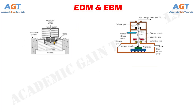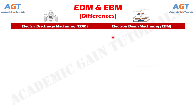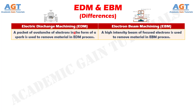Let's look into the basic differences between Electric Discharge Machining and Electron Beam Machining in a tabular form. Difference number 1: A packet or avalanche of electrons in the form of a spark is used to remove material in the Electric Discharge Machining process, whereas a high intensity beam of focused electrons is used to remove material in the Electron Beam Machining process.